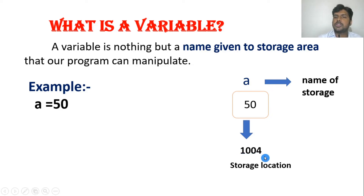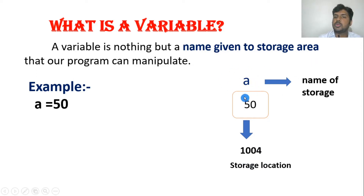Instead of referring to the memory address every time, I have given a name — that is 'a'. So the storage name is 'a', and that is the variable. The name given to a storage area is the variable. Variables help us make our work easy. For example, if I want to add, I can say a + b, and if I want to overwrite or delete a value, it will also be easy.